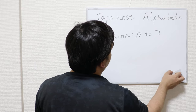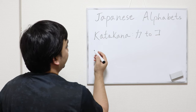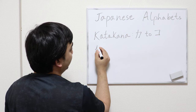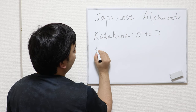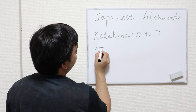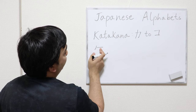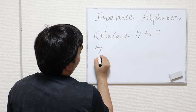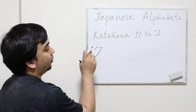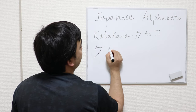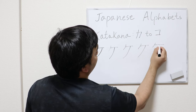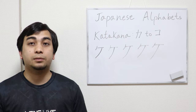Next is ke. Ke is very similar to ku. In fact, the first and second steps are the same — start with a small curve from top to bottom left, follow it with a horizontal line. But instead of starting from the end of the horizontal line, you start from a bit to the left of it and make a curve like this. That's your ke. Write ke five to ten times, and pronounce it as you write.